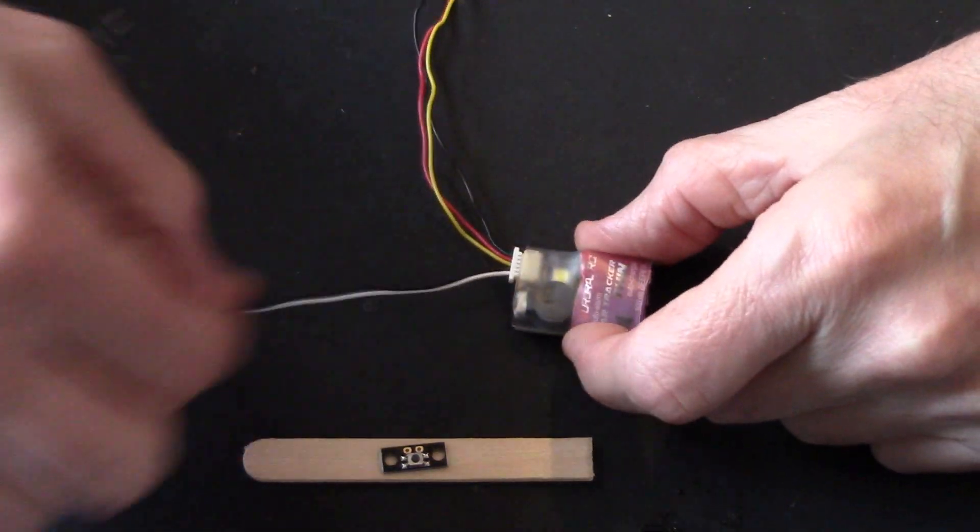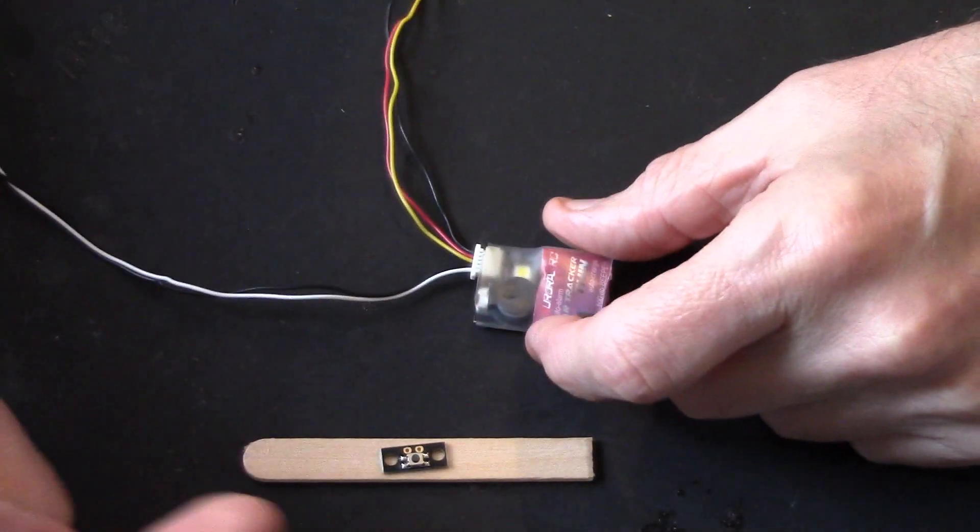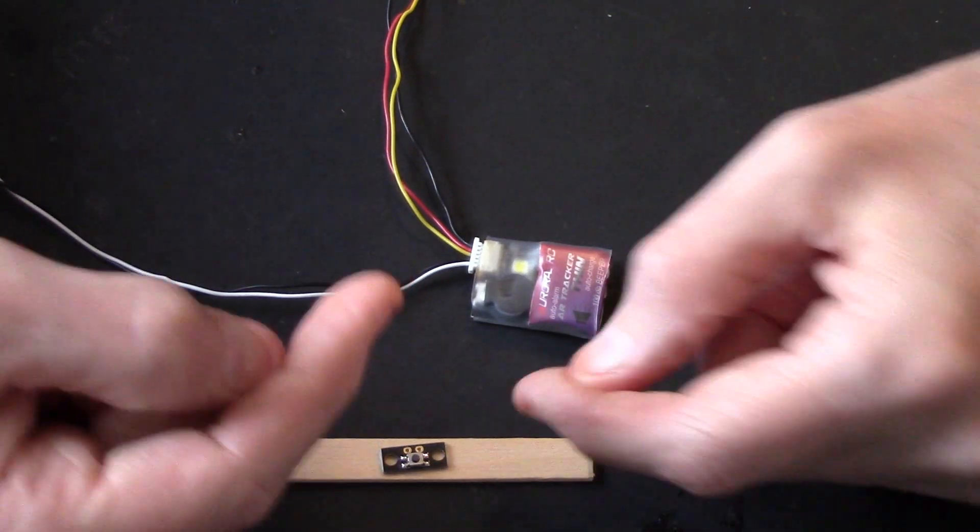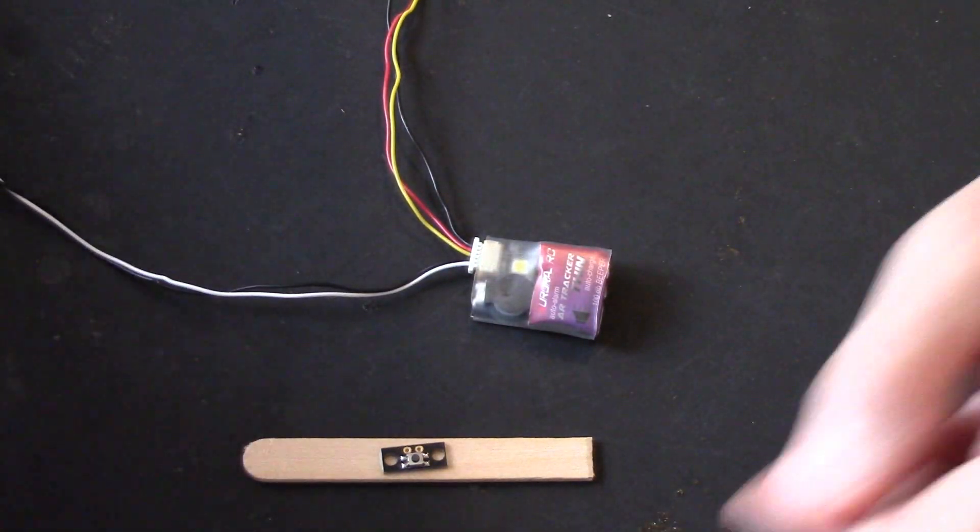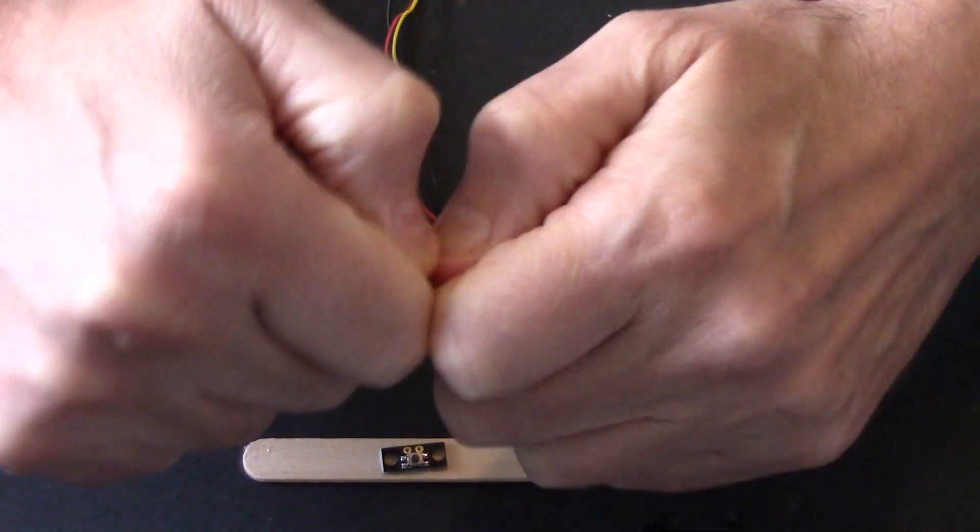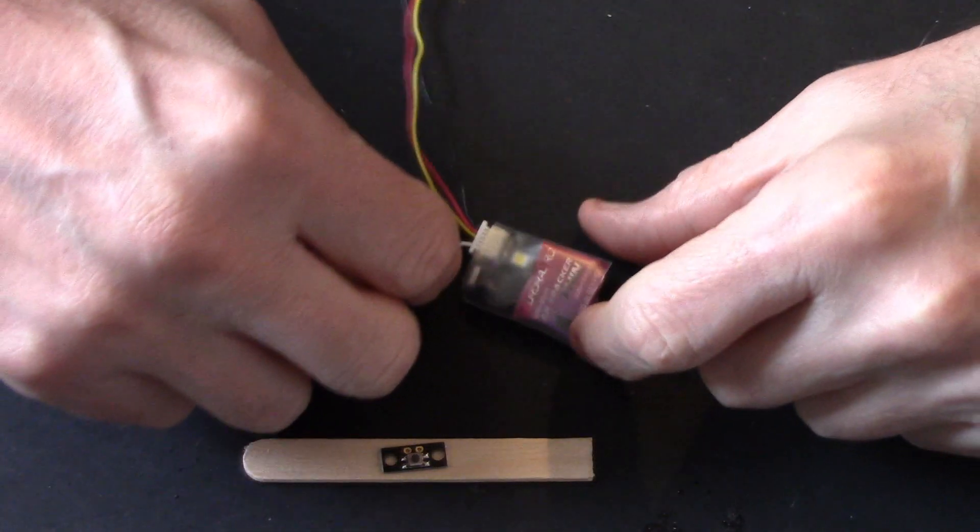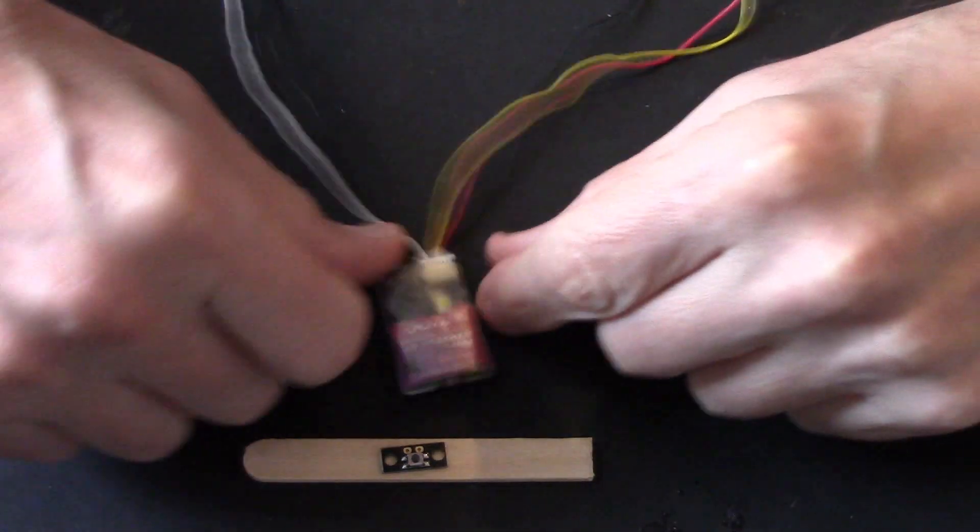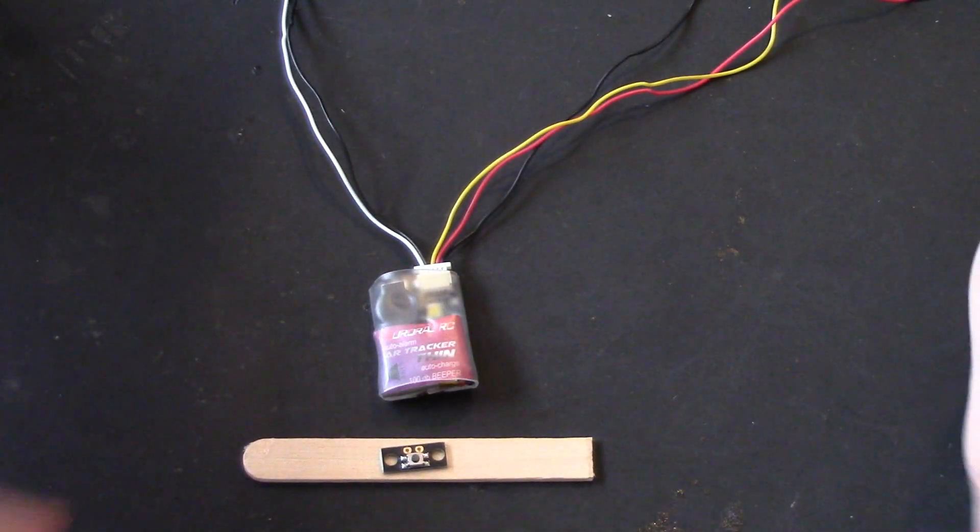So when you come along and your buzzer's going off, it's so easy to get at, depending on where you mount it, rather than trying to get your finger inside the quad and press that bloody button, you know what I mean? Or plug in your battery, unplug your battery, plug in your battery, unplug your battery...